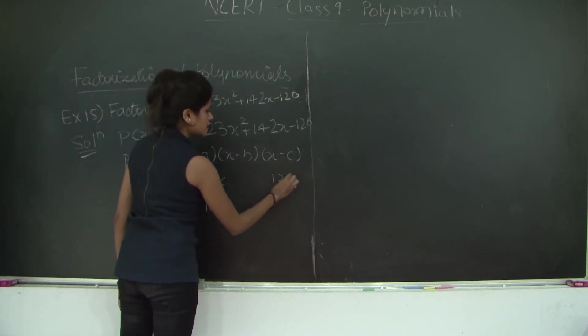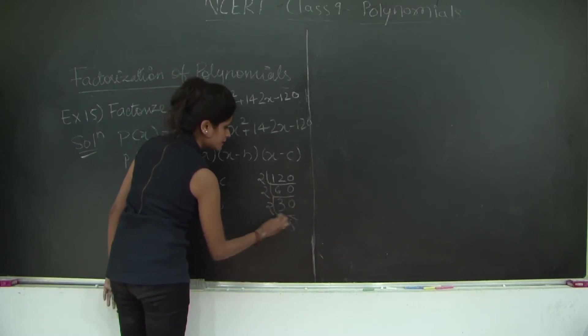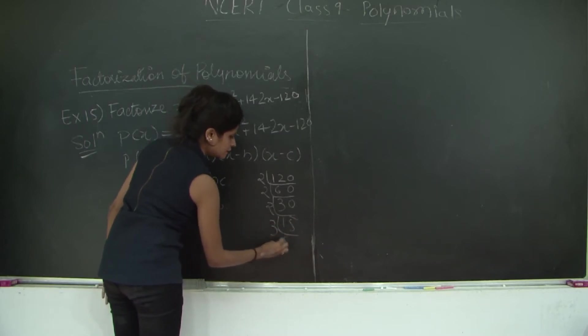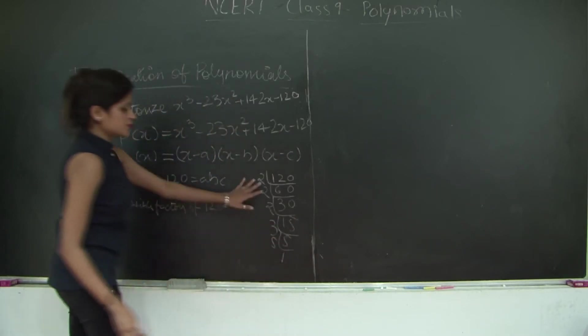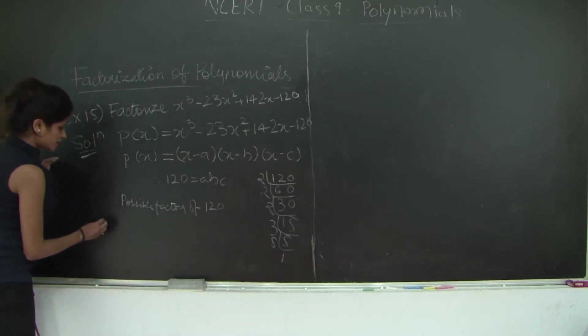Let's find this out. We have 120. So you have 2 × 6 = 12, 2 × 3 = 6, 2 × 15, 3 × 5, 5 × 1. Using different combinations of these numbers we will get the possible factors.